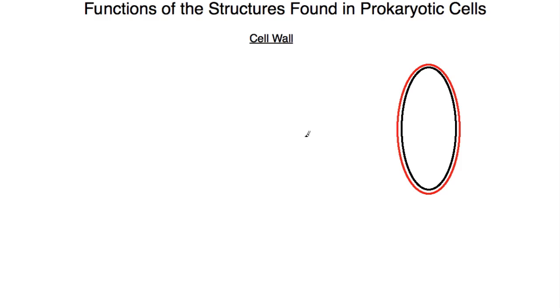Let's look at the functions of the structures found in prokaryotic cells. Let's start with the cell wall. I've got my cell here, and remember that cell has two layers. It's got an inside layer called the plasma membrane and an outer layer here called the cell wall. And the cell wall really has three functions. The first one is protection.